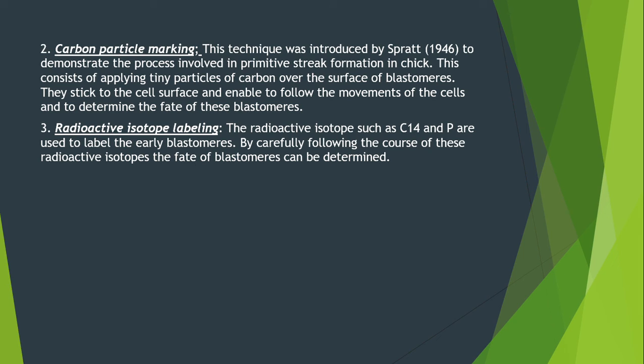The third method is radioactive isotope labeling. Radioactive isotopes such as C-14 were used to label early blastomeres. By carefully following the course of these radioisotopes, the fate of blastomeres can be determined — you can use radioactive isotopes to see how a particular organ, tissue, or cell, or even a group of cells, grows.